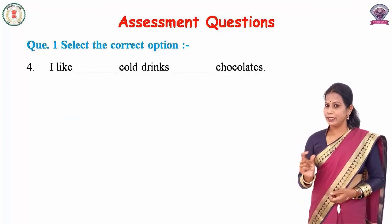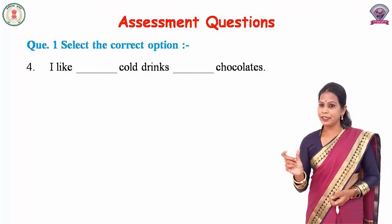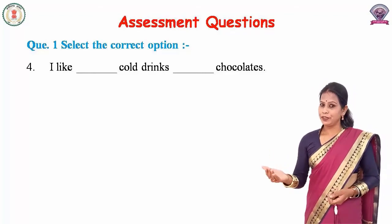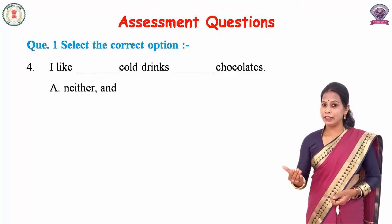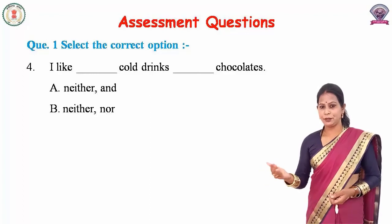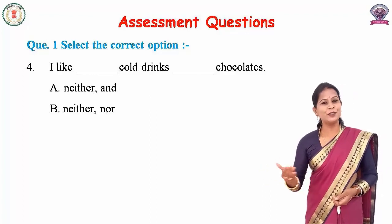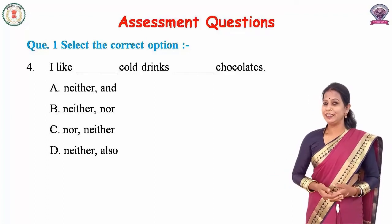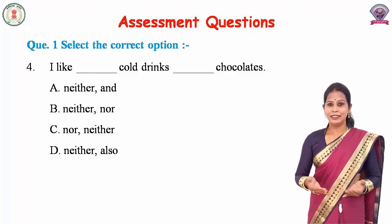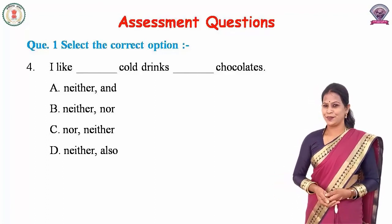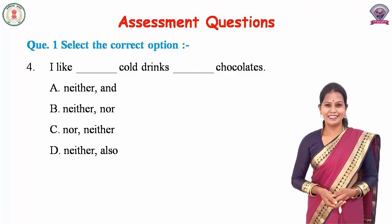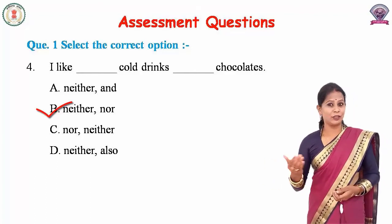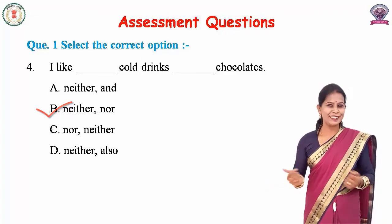'I like ___ cold drinks ___ chocolate.' The options are A. Neither...And, B. Neither...Nor, C. Nor...Neither, D. Neither...Also. And the correct answer is B — Neither...Nor. I like neither cold drinks nor chocolates.